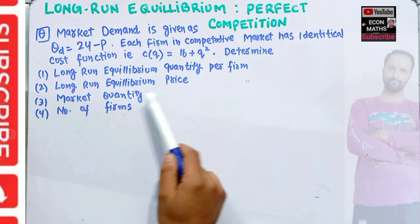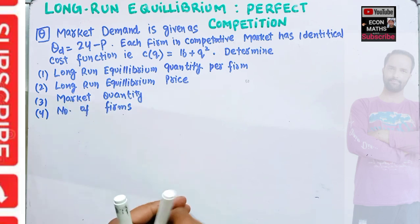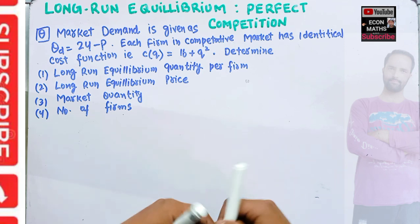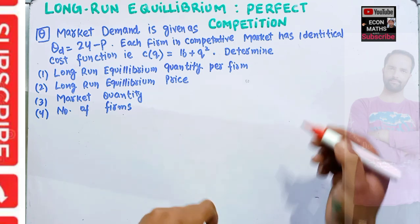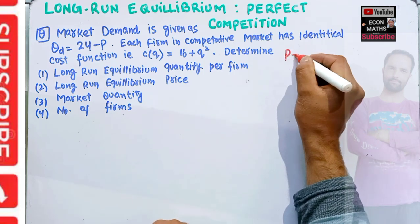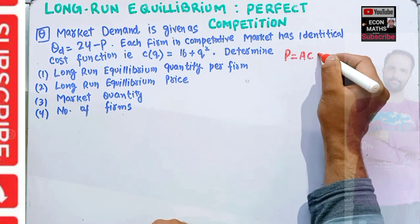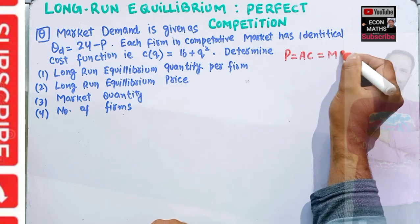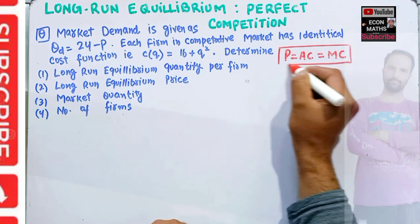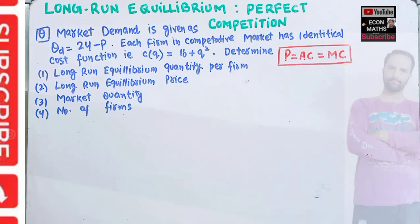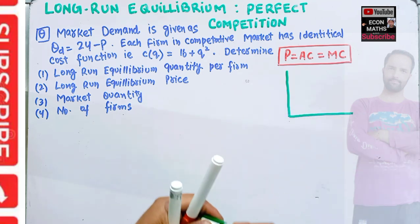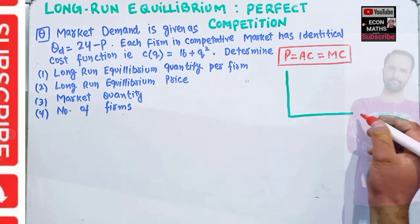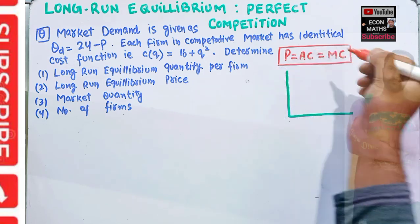We have to determine the long-run equilibrium quantity per firm, the long-run equilibrium price, market quantity, and number of farmers. In the long run, the equilibrium is characterized by zero economic profit. This means the condition where price is equal to average cost, which is equal to marginal cost. This is the long-run equilibrium condition under perfect competition. Graphically, if we have quantity on one axis and average cost, marginal cost, and price on the other axis...